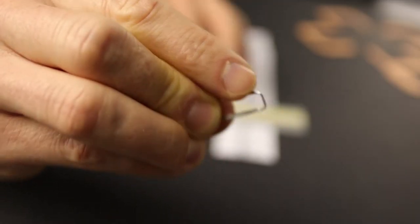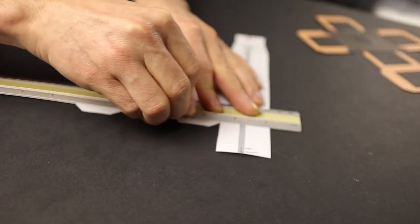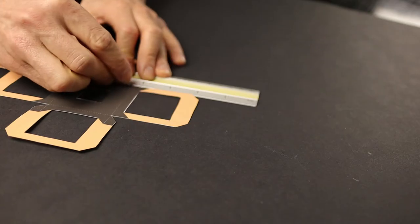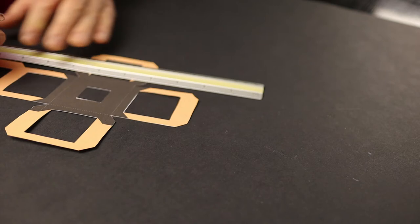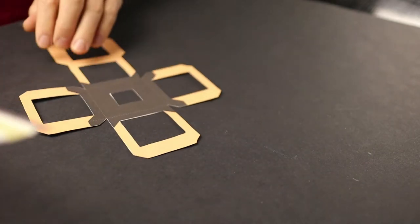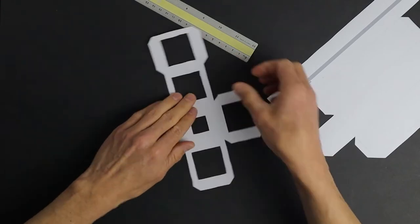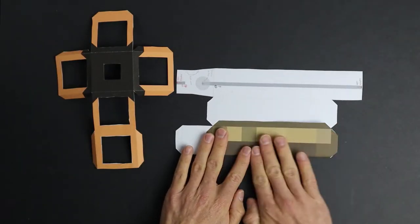Now score every edge marked by dotted lines like shown. Use the round edge of a paper clip or any other pointy object and press down with quite some force. This will make folding the edges much much easier. Now fold every edge that you scored so that we can simply glue everything together later on.